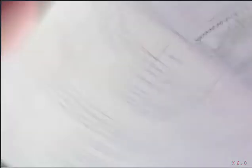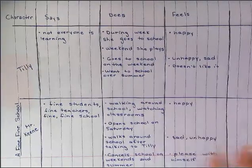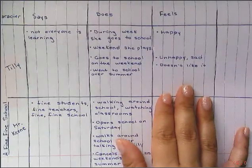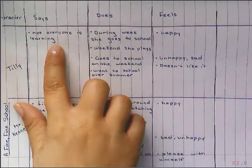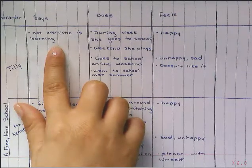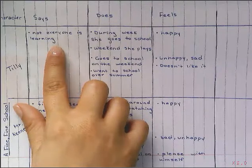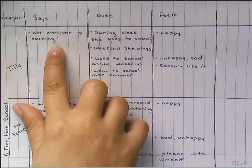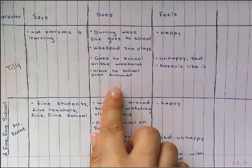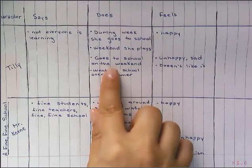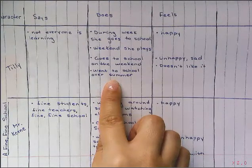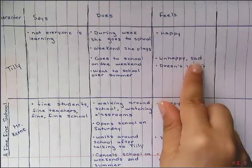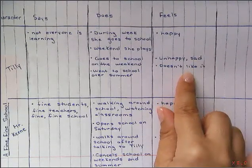I'm going to focus on Tilly to show you how to do this, and then you're going to do this work with Mr. Keen. When I finished reading the story, I added a few more things to my chart. Tilly goes into Mr. Keen's office and tells him that not everyone is learning — her dog doesn't learn things, her little brother's not learning things, she's not learning things outside of school. I also added that she has to start going to school on the weekends and over the summer. And then I noted that she changes how she feels — she wasn't happy anymore, she was unhappy and sad that she was at school all the time.